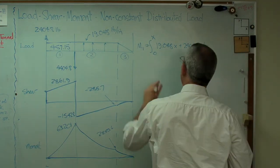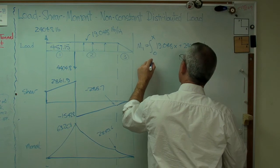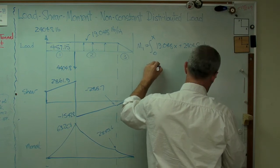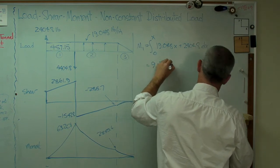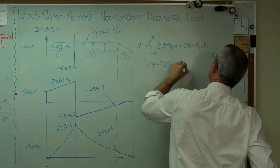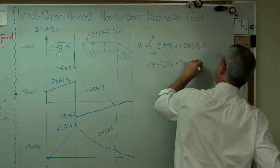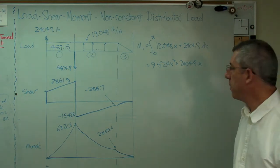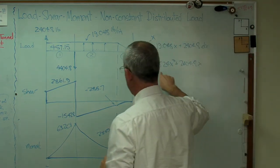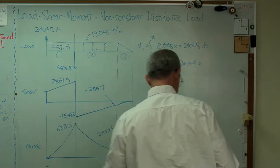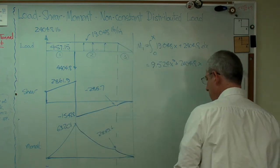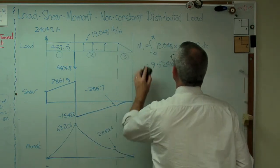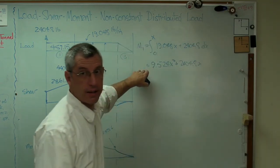Integrate that all out. And you get 9.524x squared plus 2404.8x. That sure looks like a parabola. And if we plug in x equals 24, we're going to get that number right there, 63201. So that's M1.